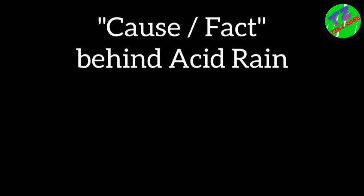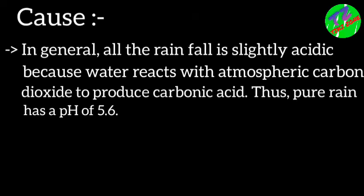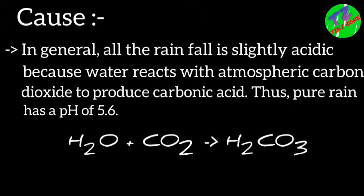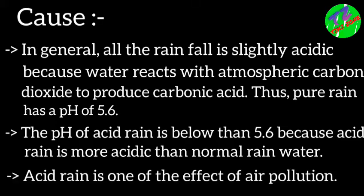In general, all rainfall is slightly acidic in nature because water reacts with atmospheric carbon dioxide to produce carbonic acid. Thus, pure rain has a pH of around 5.6. The pH of acid rain is below 5.6 because acid rain is more acidic than normal water.